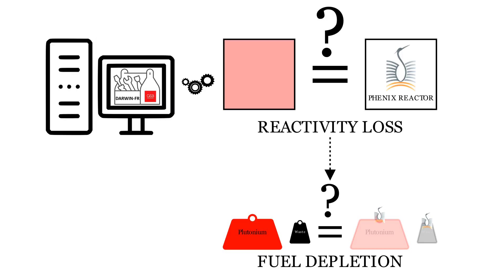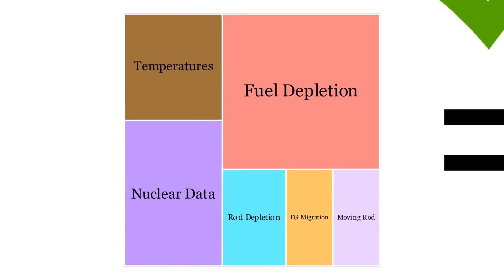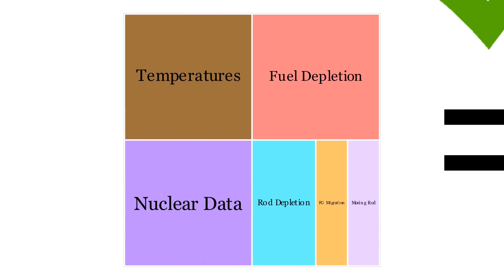But we need to be careful. Knowing the accuracy on the reactivity loss doesn't give directly the accuracy on fuel depletion. Because being good for the reactivity loss does not mean that you are good on every effect that contributes to it. You can also be bad everywhere but lucky. After all, a broken watch gives you the right time twice a day.